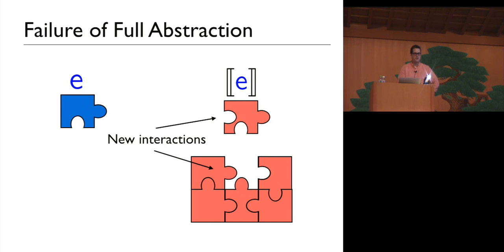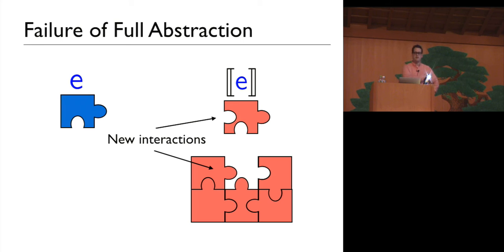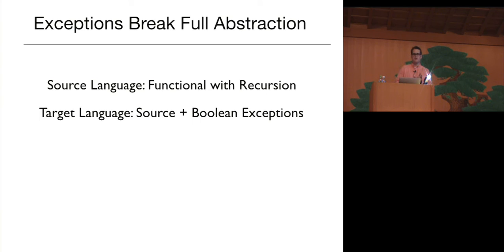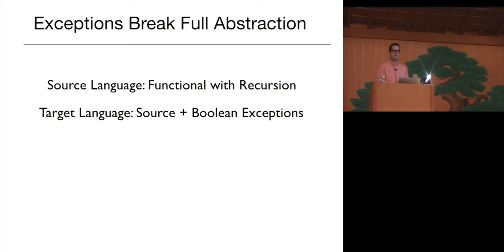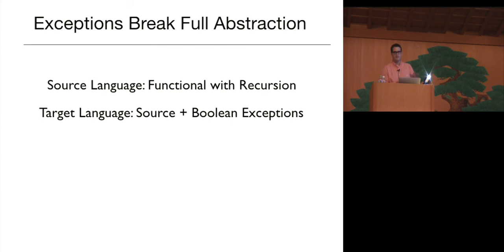Full abstraction fails when the target interface is too liberal — it opens up new ways to interact with compiled programs that weren't available in the source language. As a simple example, let's look at how control flow in the target language breaks full abstraction, specifically using exceptions. Take as a source language a functional language with general recursion, and as the target language, the same language but with the ability to raise Boolean-valued exceptions. I'll show that this embedding is not fully abstract.